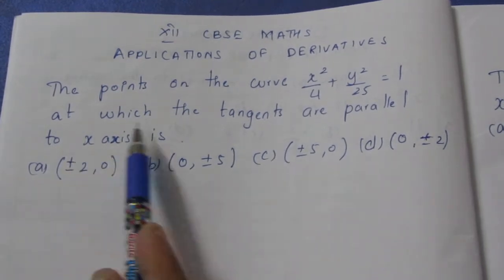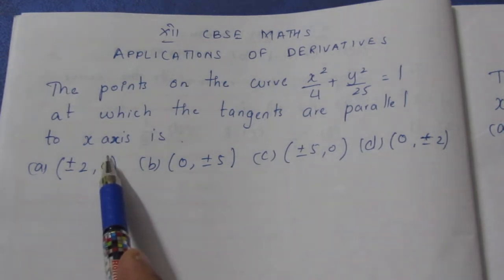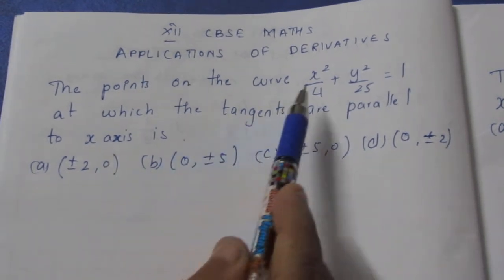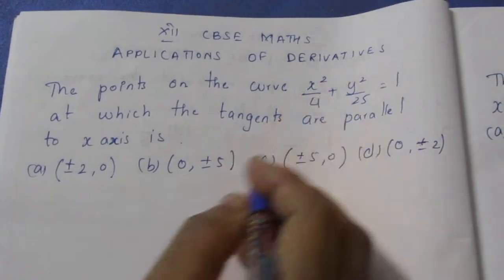If the tangents are parallel to x axis, then we can say that slope is equal to 0. For tangent parallel to x axis, the slope will be 0. So let me start with the sum to find the slope.